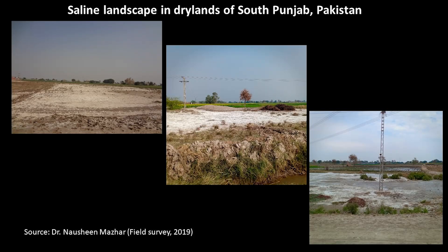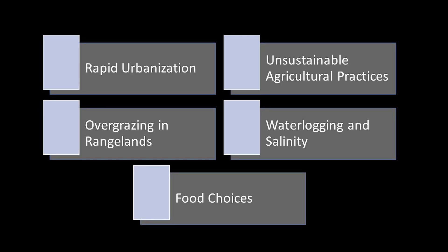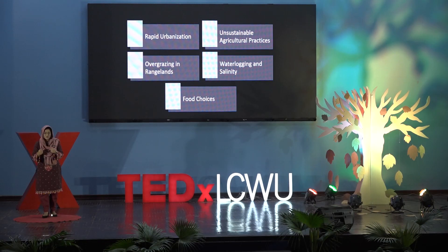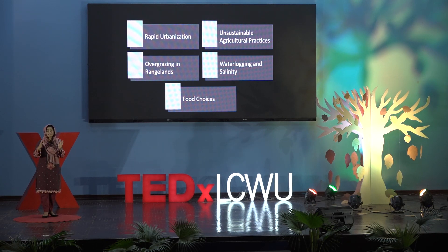We are all playing our part in one way or another in degrading the lands of these dry lands. Rapid urbanization, unsustainable farming practices, overgrazing in the rangelands, even our food choices — which lead to massive deforestation resulting in greenhouse gas emissions — all contribute to land degradation.